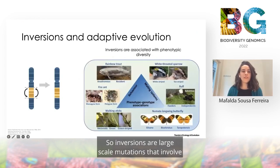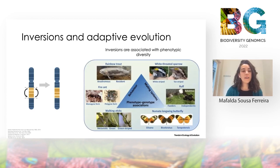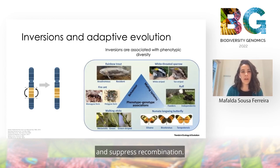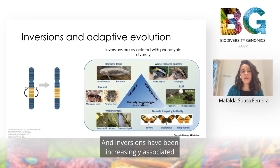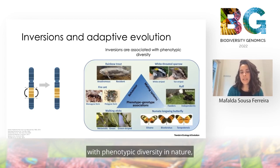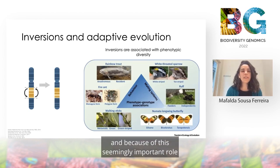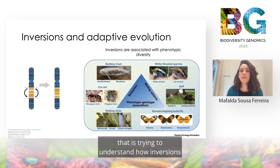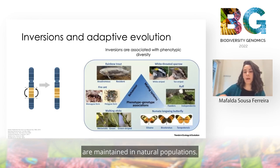Inversions are large-scale mutations that involve a shift in some region in the genome and suppress recombination. Inversions have been increasingly associated with phenotypic diversity in nature, and because of this seemingly important role in adaptive evolution, this has motivated a lot of research trying to understand how inversions are maintained in natural populations.